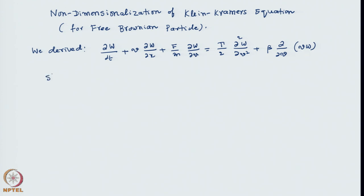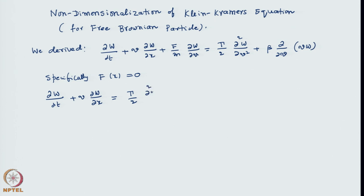Specifically, let us say f(x) equals 0 — no external force, it is a free particle. It is not necessary to do that, but this is just an illustration. Then the equation takes the form: dw/dt plus v(dw/dx) equals gamma/2 times d²w/dv² plus beta times d/dv of (vw). This is a second order equation in velocity and first order in space.